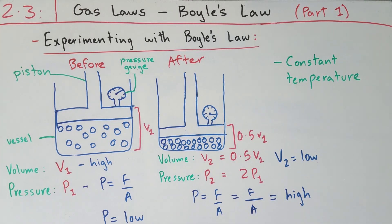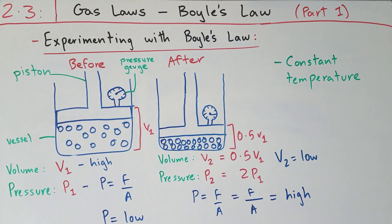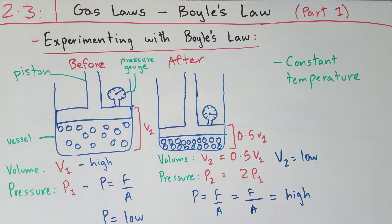In verbal terms: when the gas is compressed from V1 to 0.5V1 (V2), the pressure of the gas will double to 2P1 (P2), while making sure that the temperature of the gas in both scenarios is constant.